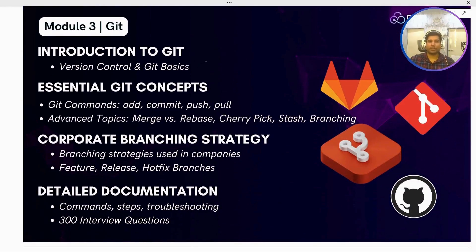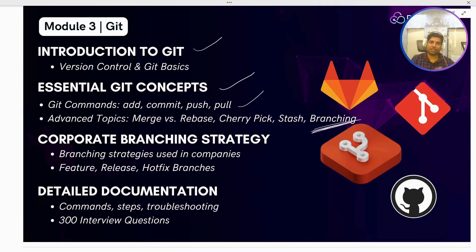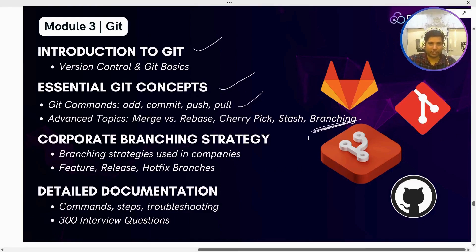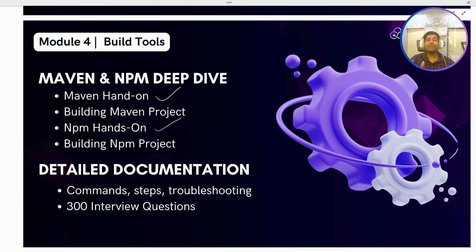Module 3 covers Git — what exactly it is, why we need it, how it's beneficial, essential concepts, general commands, and many advanced topics. The most important thing you may face in interviews is branching strategy, so I'll explain multiple branching strategies since companies may have different ones depending on requirements. Then Module 4 covers build tools in depth — Maven and npm. For Maven, we'll cover lifecycle phases, build a Maven project, and understand how it's used in real time. Similarly for npm.